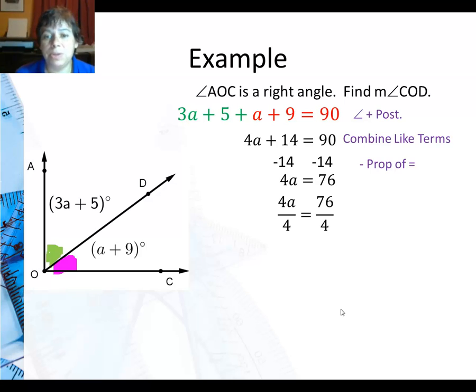Now I can divide both sides by the same number, by the division property of equality. And I get A is 19.